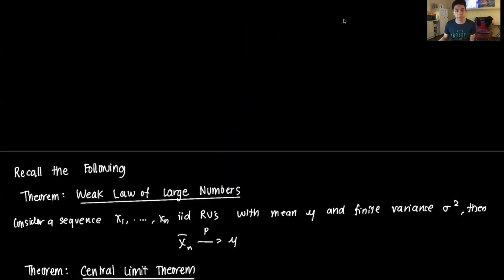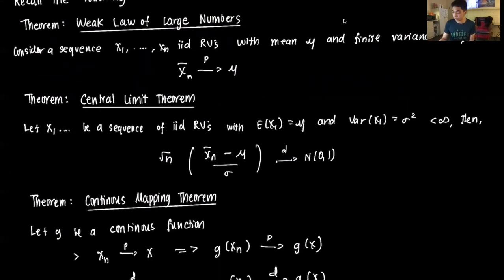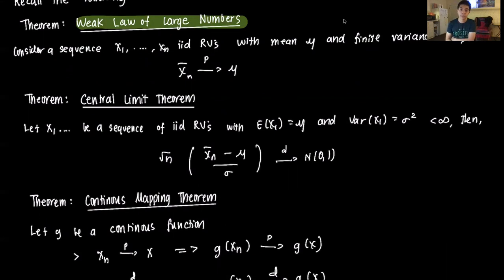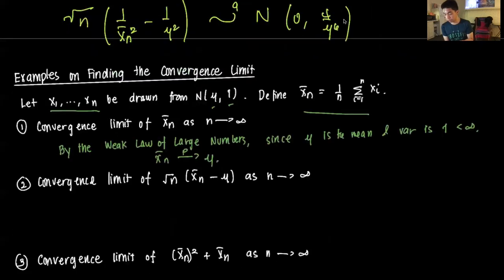To recall, according to the weak law of large numbers — our very first theorem — if we consider a sequence of independent and identically distributed random variables with some mean and finite variance, then the sample mean will converge to the true mean in probability as n approaches infinity. That's the weak law of large numbers.